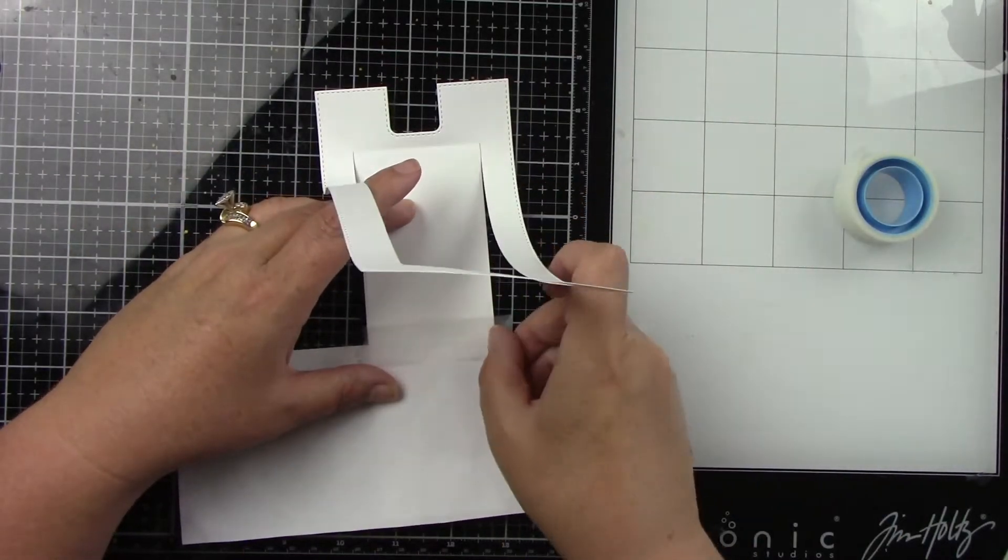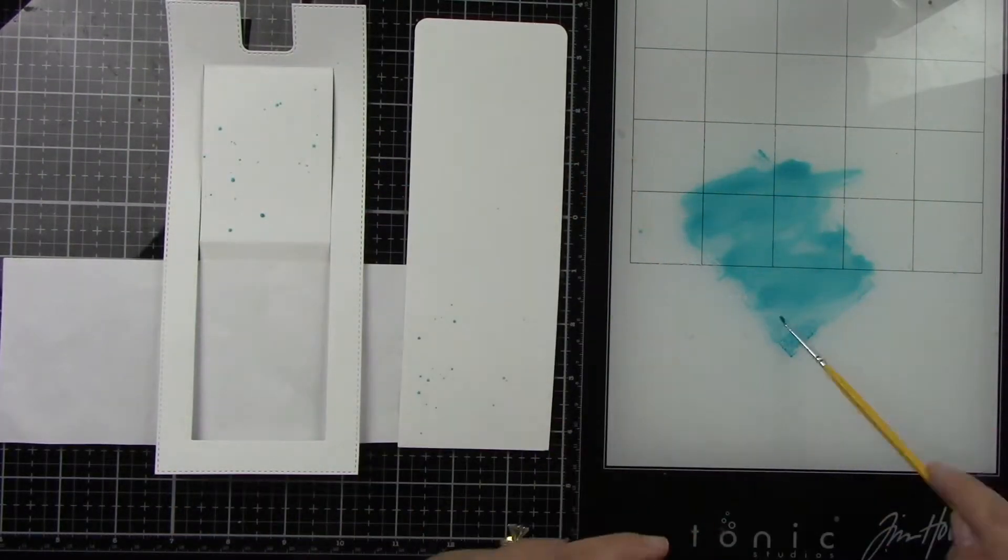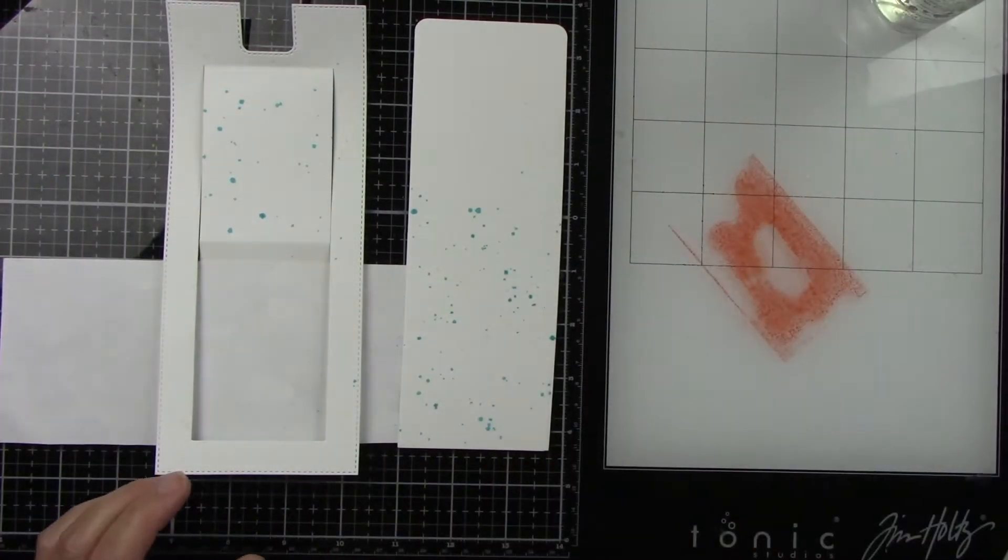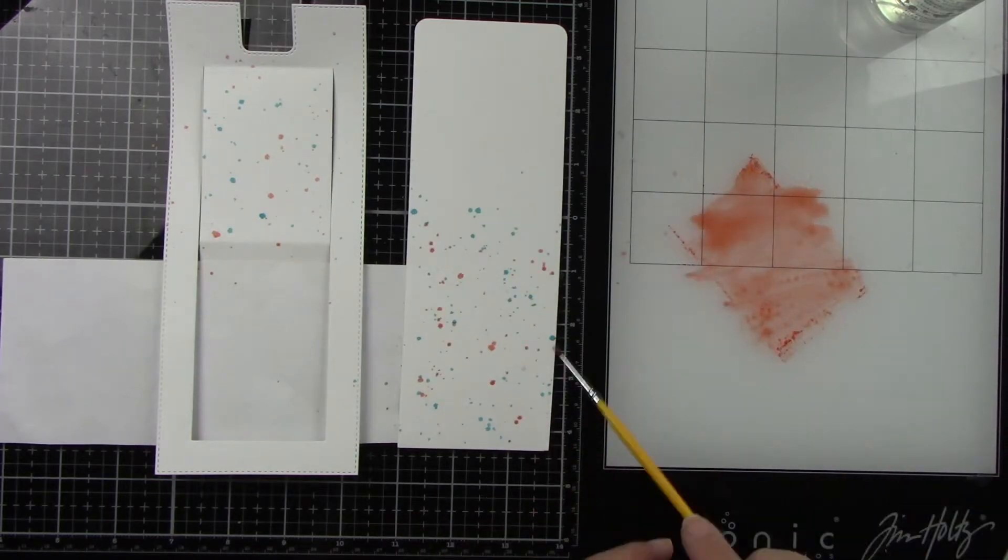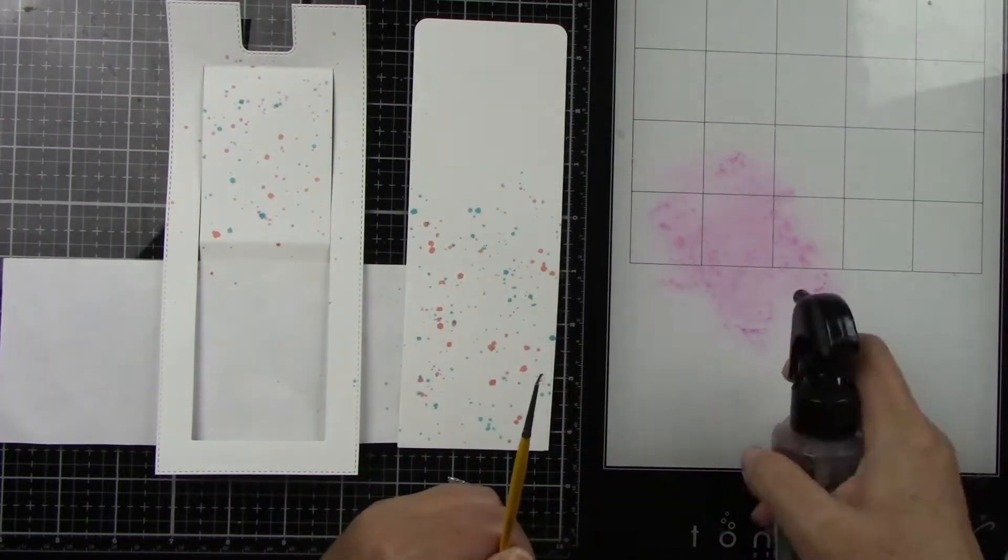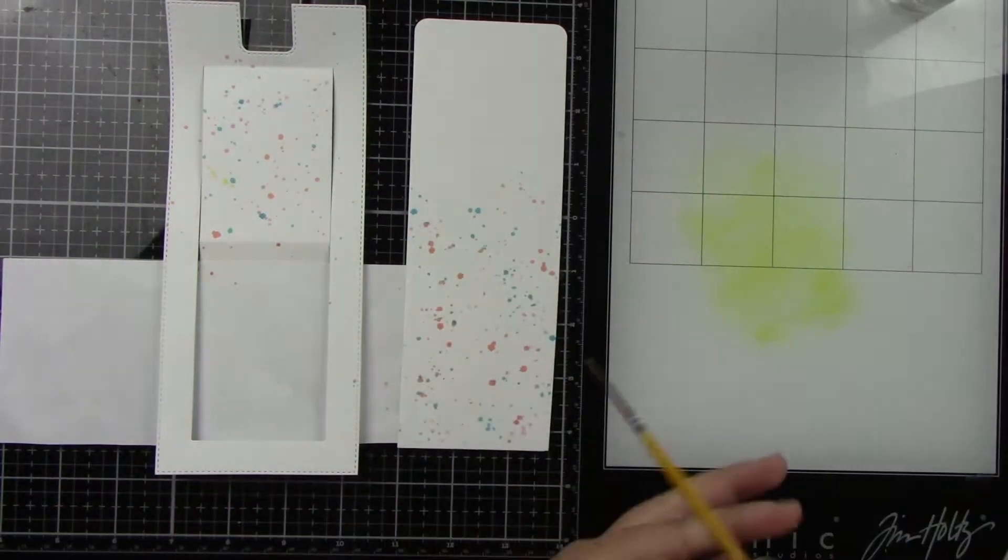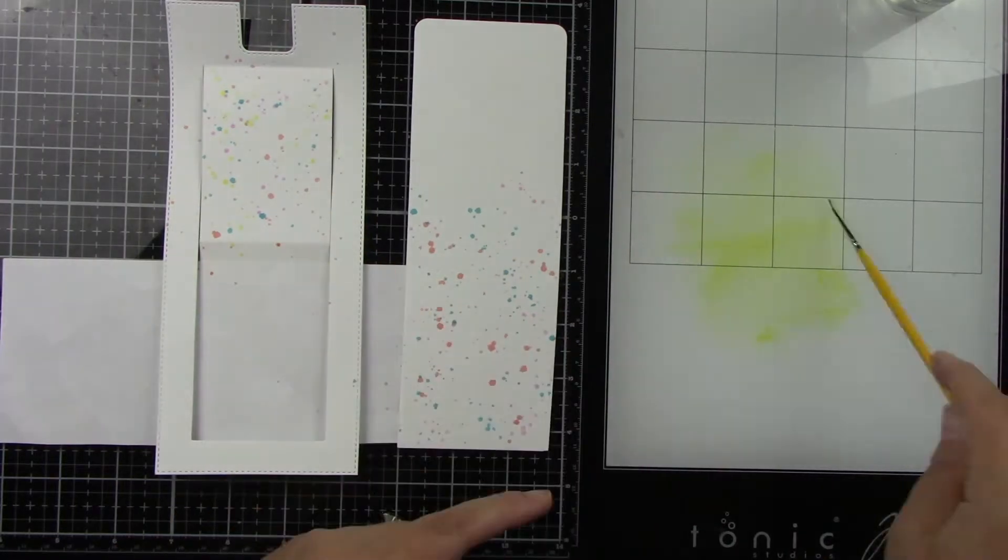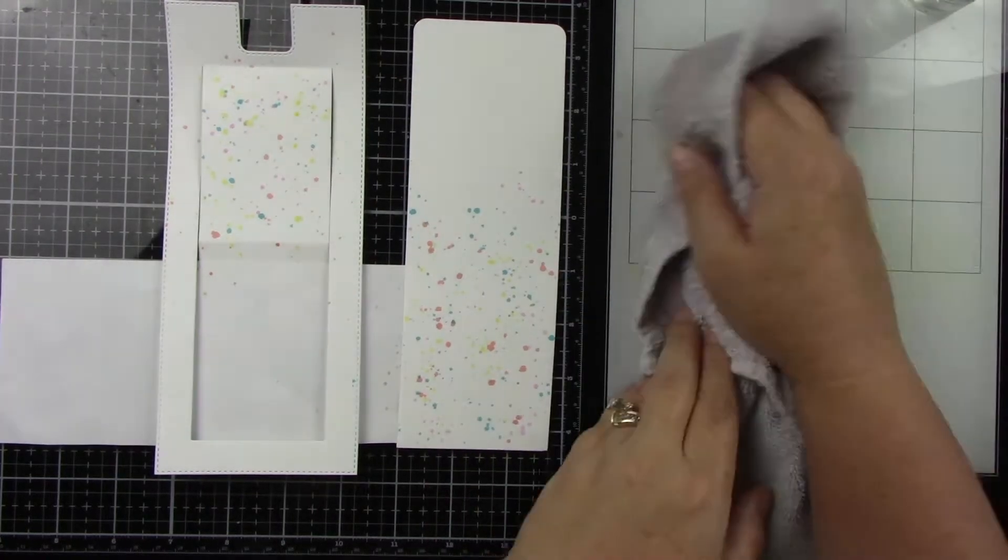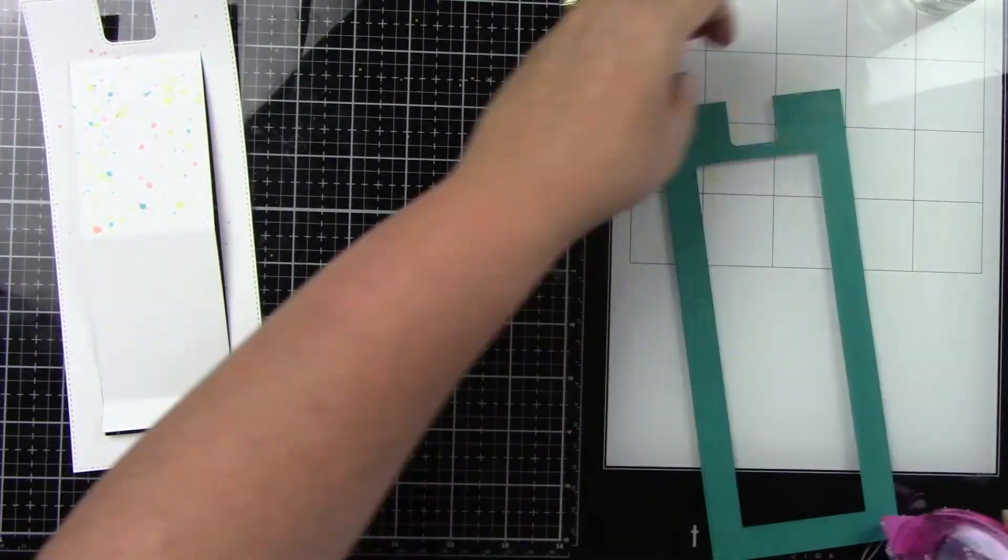I decided to do some splatter. I'm using Simon Says Stamp positively saturated inks in Ocean, Grapefruit, Bubblegum, and Lemonade. I'm splattering on that back piece, which I should have splattered the whole thing. Then I splattered on the top half. I taped off the bottom half of the slider piece because I did not want that to have splatters.